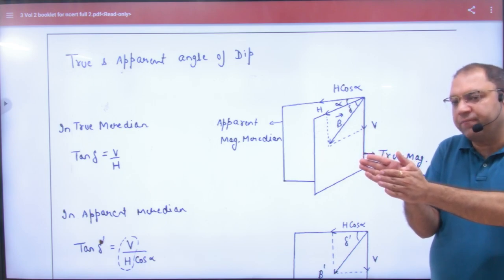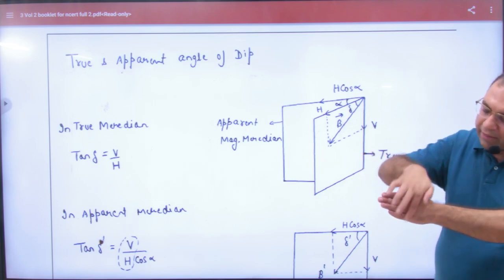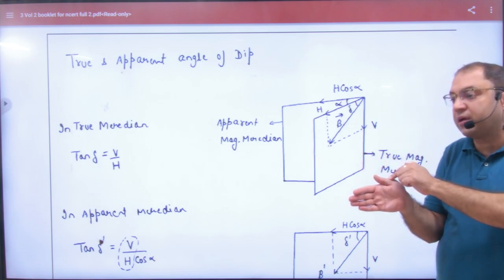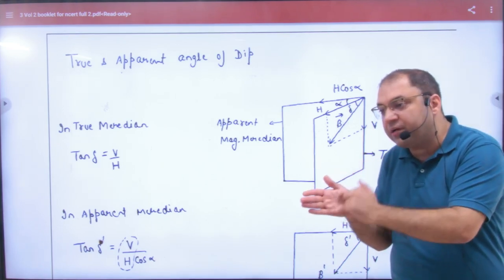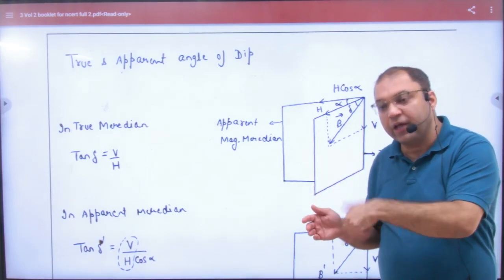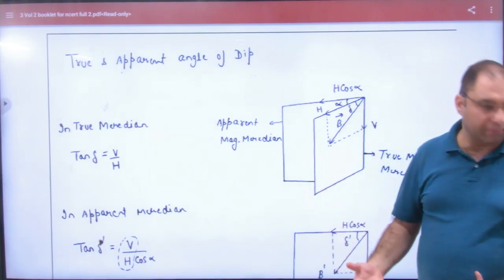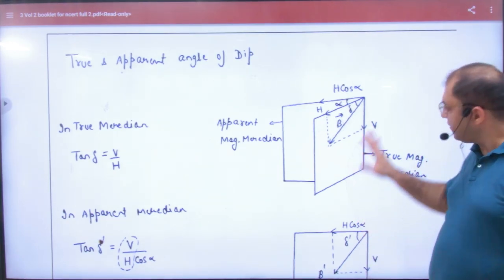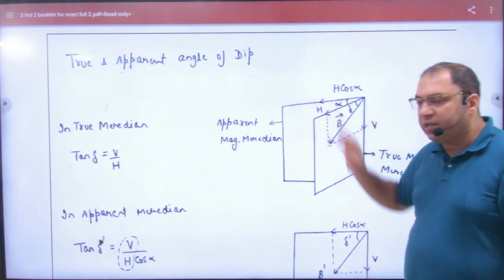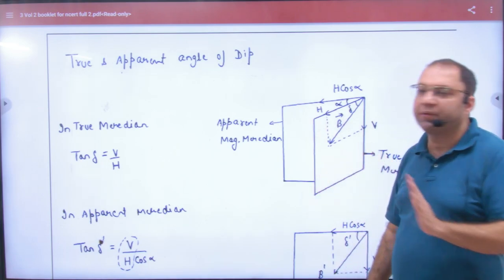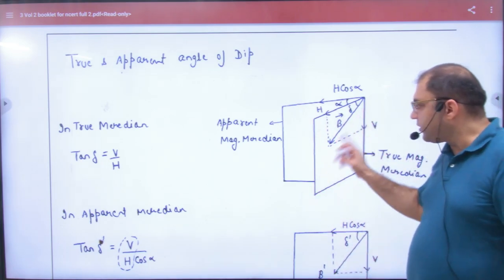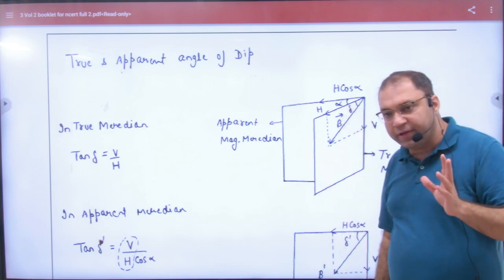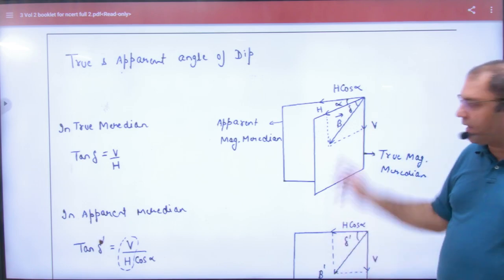If you ask that if the magnetic needle goes here and true angle of dip, then if it is in the dip, then it will also bend. So what will be the angle of dip? Angle of dip. Imaginary meridian. So actual true magnetic meridian is the same. It is imaginary. What do we call? Apparent magnetic meridian. This is true magnetic field. This true angle of dip has the horizontal component. It has two components, one H and one V.